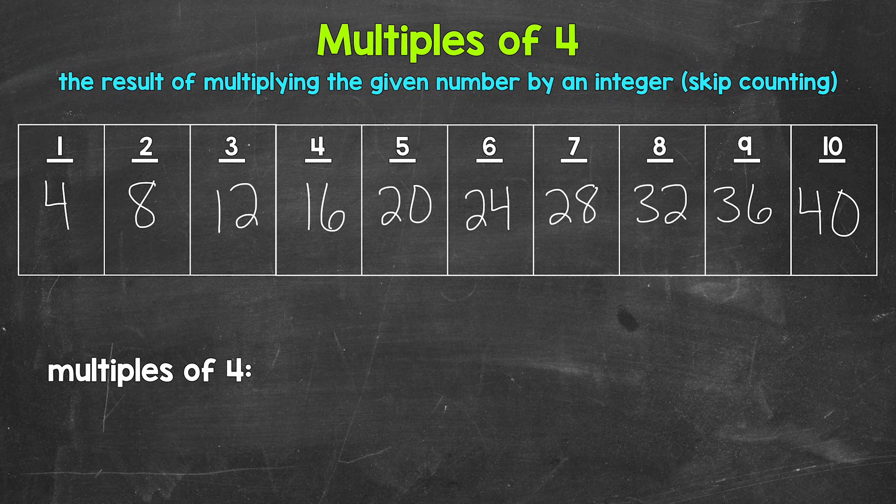Now let's write these multiples in a list below. And you'll notice we're just counting up by four. Like I mentioned earlier, another way to think of multiples is to skip count.